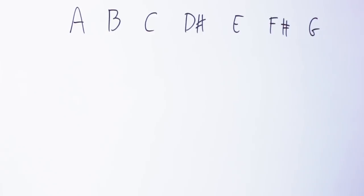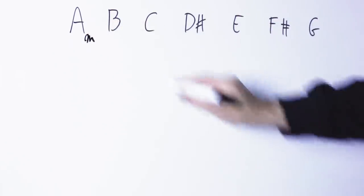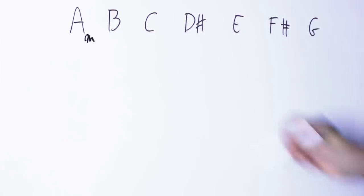So, on the A note I can build an A minor chord, A, C, E. On the B note I can build a B major chord, B, D sharp, F sharp. On the C note I can build a C major chord, C, E, G.